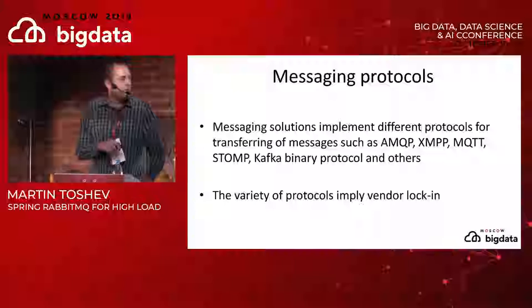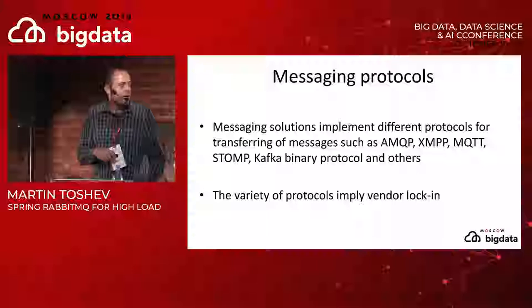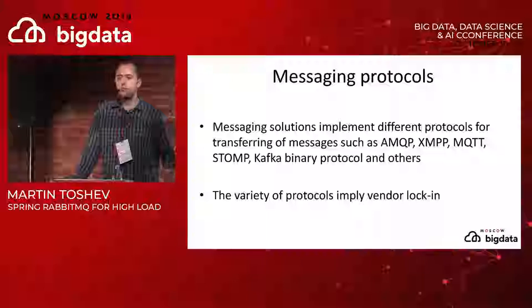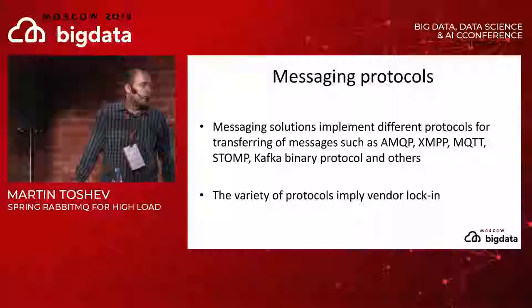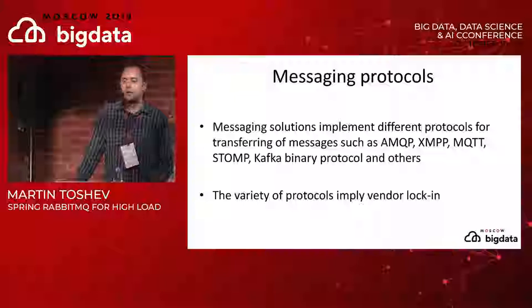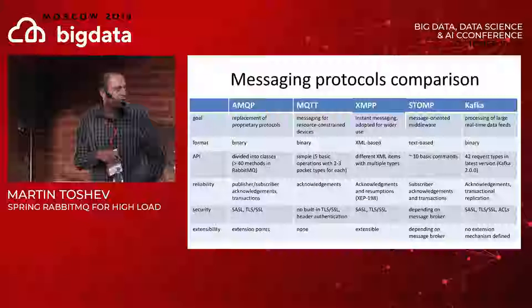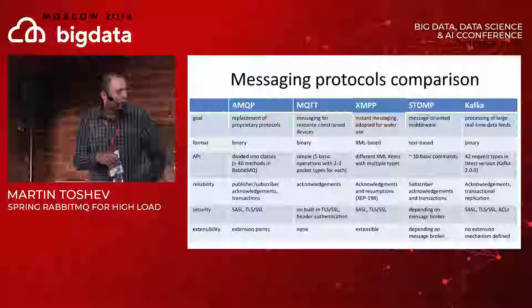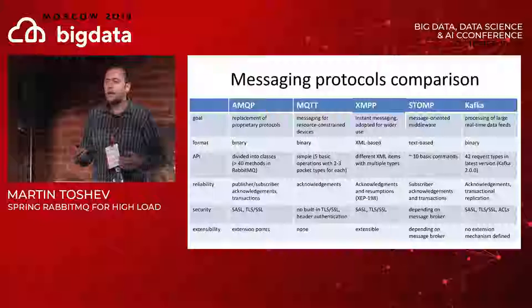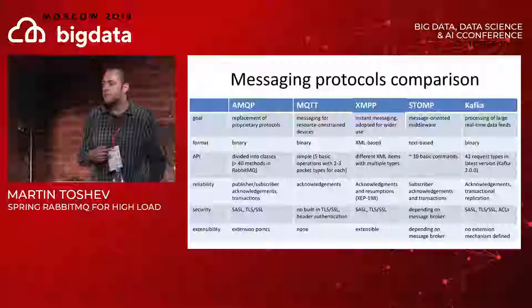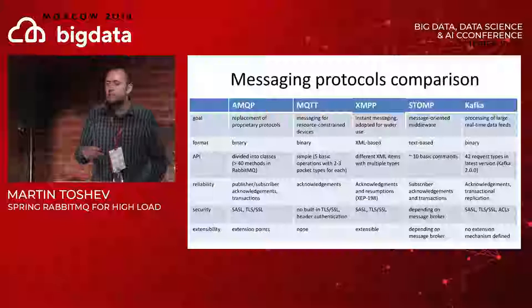There is a variety of messaging protocols and solutions you can choose from. We're going to talk about RabbitMQ and the underlying AMQP protocol, but you can also use other solutions like Kafka, MQTT, and so on. Some of them imply vendor lock-in - for example if you choose IBM Message Queue you need to stick with the IBM technology stack. AMQP, the protocol behind RabbitMQ, has the goal of replacing any proprietary protocol as a general-purpose solution. MQTT is for resource-limited IoT devices, and Kafka has the goal of processing large volumes of stream data.